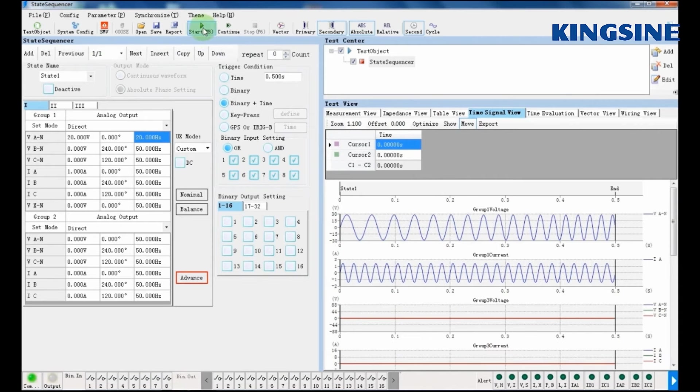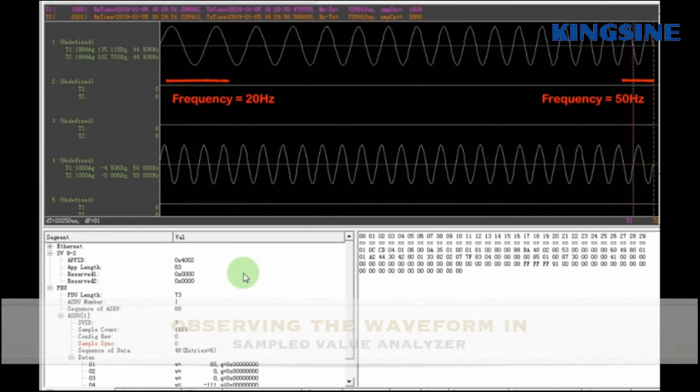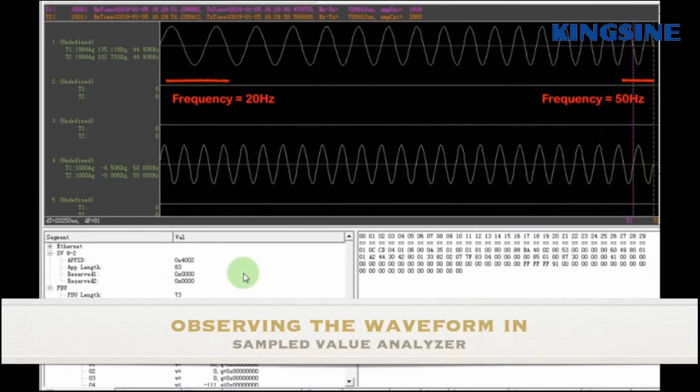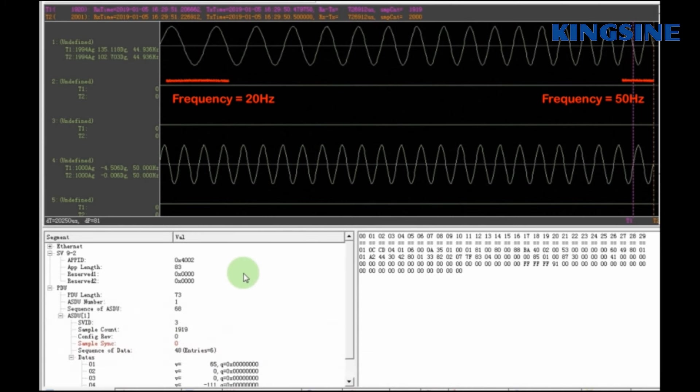As we press the play button, the same waveform can be observed in sampling value analyzer also. The waveform is a voltage signal undergoing DF by DT with 16 Hz per second increase. Hence, it is very clearly visible.